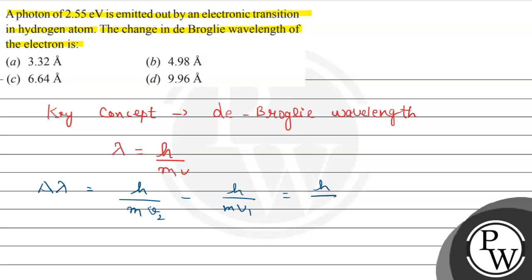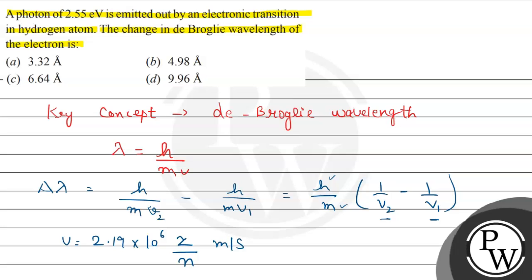Planck's constant and the mass of the hydrogen atom will remain constant, but we don't have V1 and V2 values directly. The velocity of the electron can be found with the formula: v = 2.19 × 10⁶ × (Z/N) meters per second, where Z represents the atomic number and N represents the orbit number.